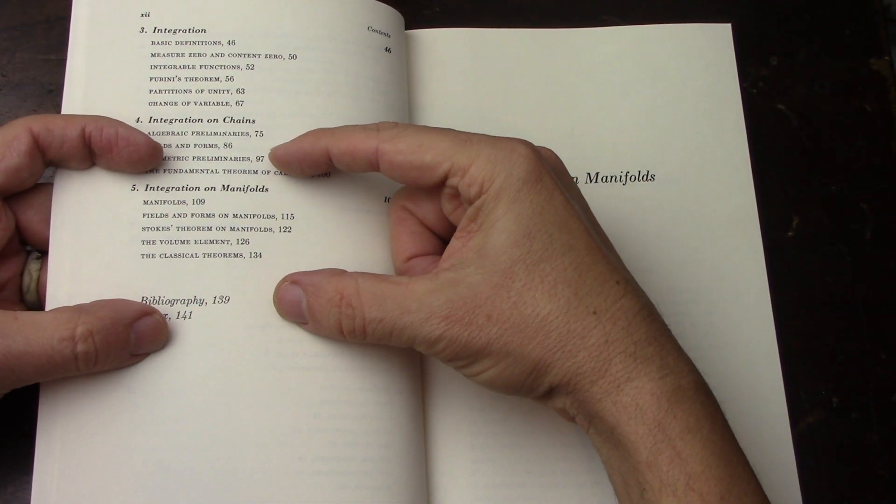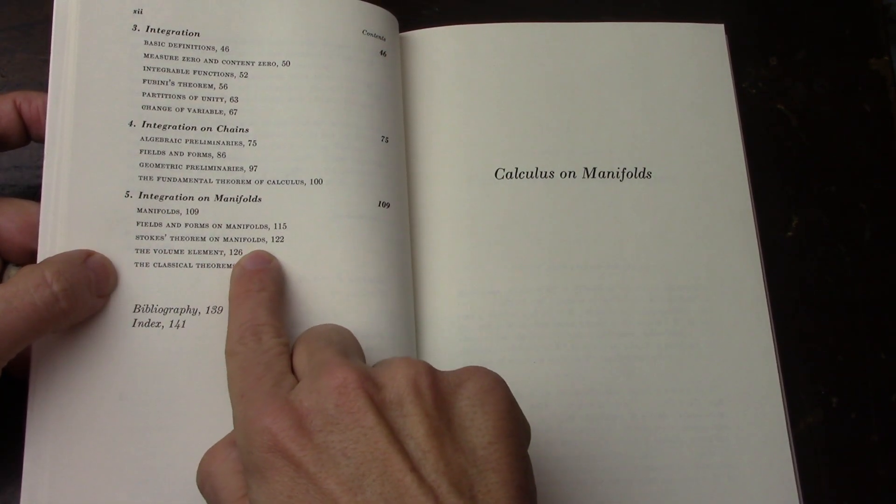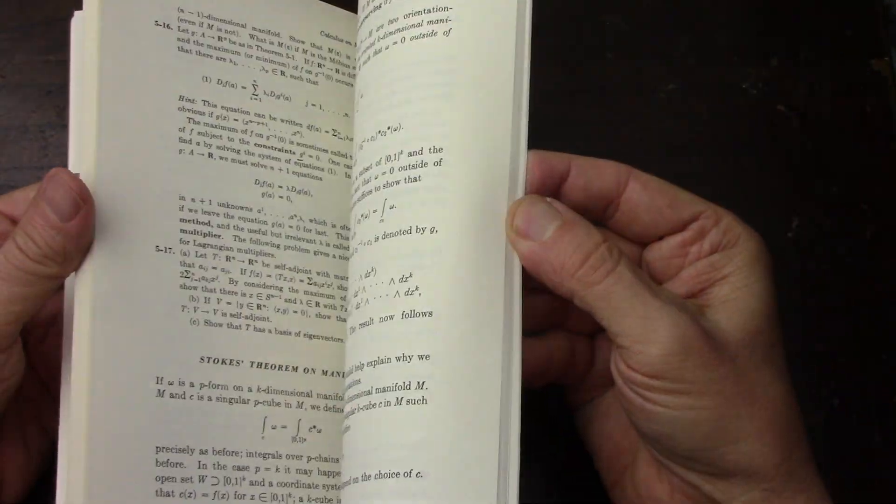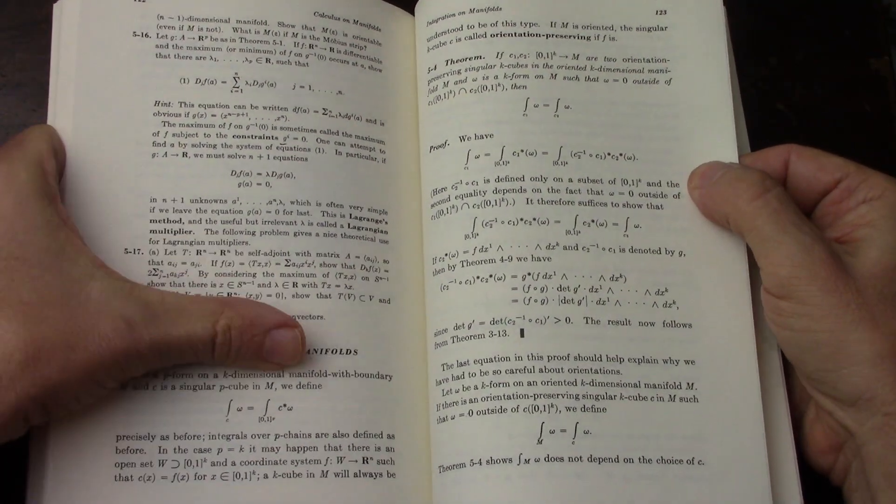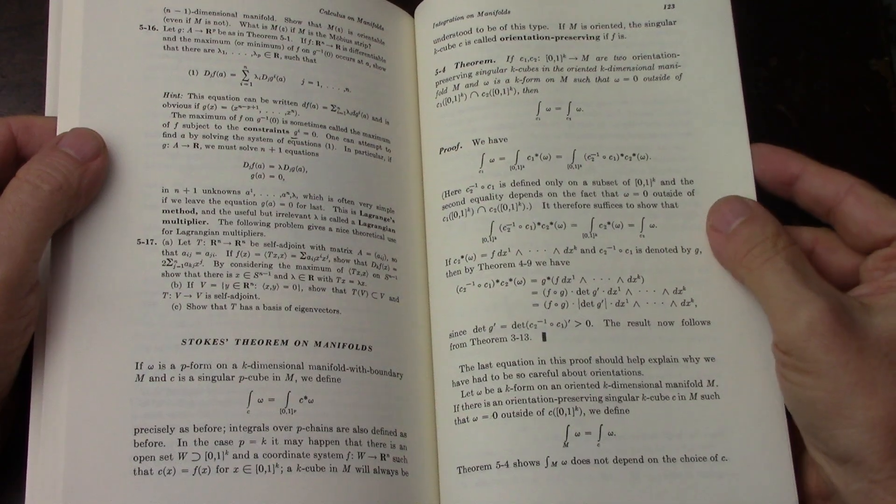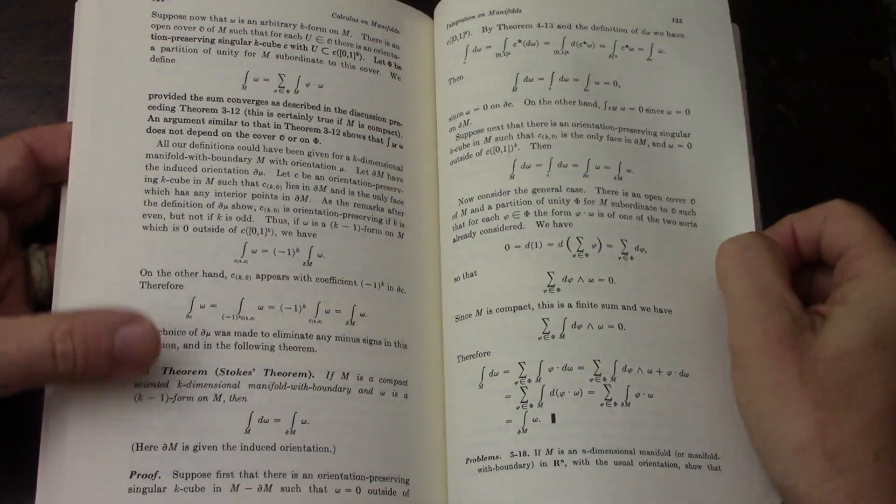All that before I get back to this. And then, of course, the main theme, integration on manifolds. And, of course, Stokes theorem on manifolds, page 122. I'm going to go right through it. I'm going to go through this book. It's very small, so I can do a lot of it. So, there you have it. That's where he proves the n-dimensional fundamental theorem of calculus, which is Stokes theorem.